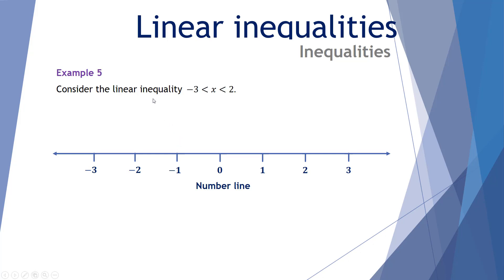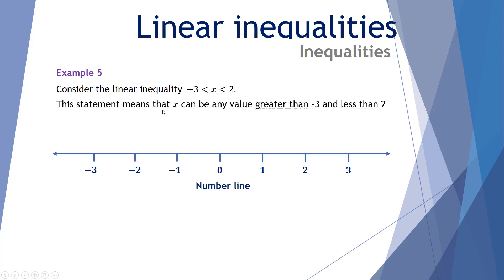Example number 5: consider the linear inequality -3 < x < 2. This statement means x can be any value greater than negative 3 and less than 2. Always read it from x's perspective. So negative 3 is the lower bookend and positive 2 is the upper bookend. It's greater than negative 3 — not greater than or equal to — so negative 3 is not included. And it's less than 2, so 2 is not included either.